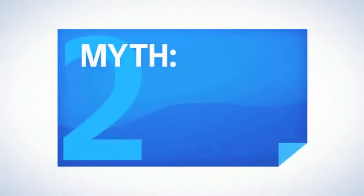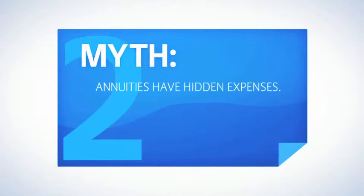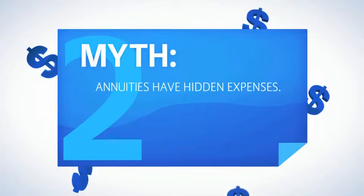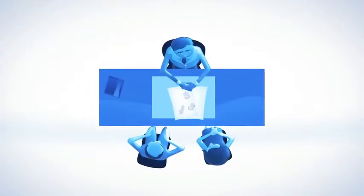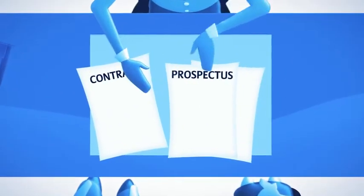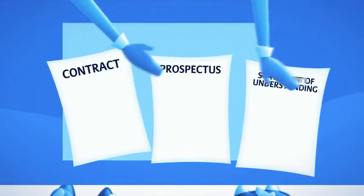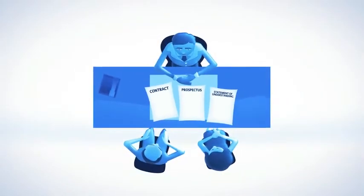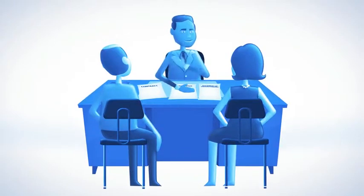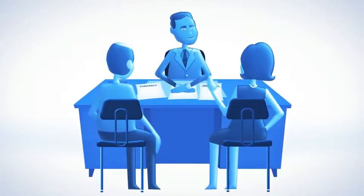Myth number two: annuities have hidden expenses. The truth is, any charges, fees, and expenses associated with annuities are not hidden away from view. Every annuity comes with documents for you to review, such as the contract and prospectus, or statement of understanding, that outline any charges, fees, and expenses. And your financial professional will explain them to you so you can make an informed decision before you buy an annuity.